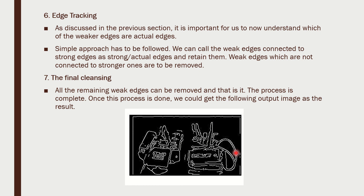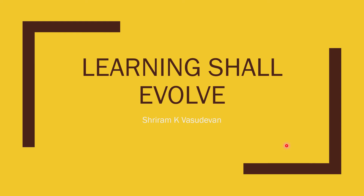Weak edges are handled through edge tracking: weak edges connected to strong edges can be retained and called strong edges. Weak edges that are not connected to strong edges are removed. This is called edge tracking, and the final cleansing step removes all remaining weak edges completely. The result is the final detected edge image using the Canny Edge Detector.